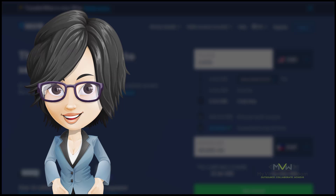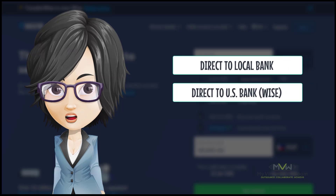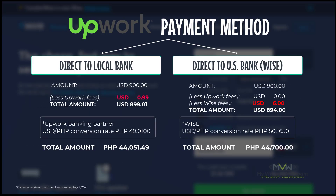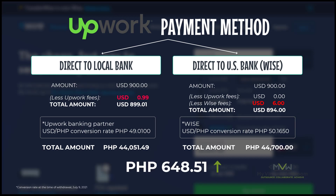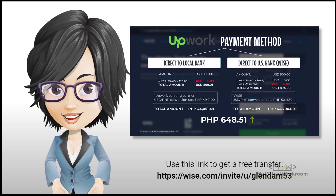Now let's check out the comparison when you use local bank transfer and Wise to get your Upwork payouts. As you can see here, I paid more fees in Wise, but in the end I got a better dollar conversion rate. So I got 648 pesos and 51 centavos more, and it's a good deal for me. So if you want to open a Wise account, please don't forget to use my referral link in the description below.